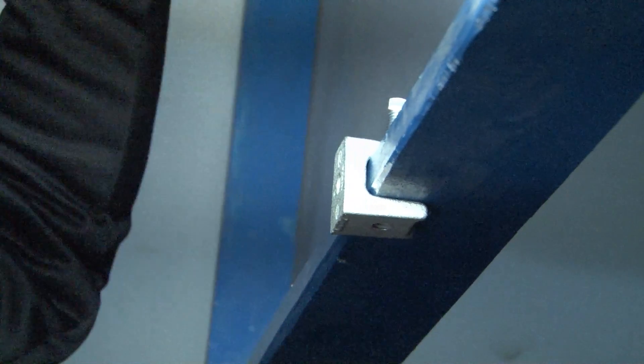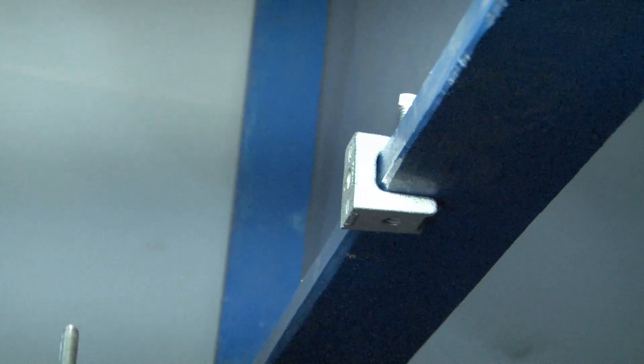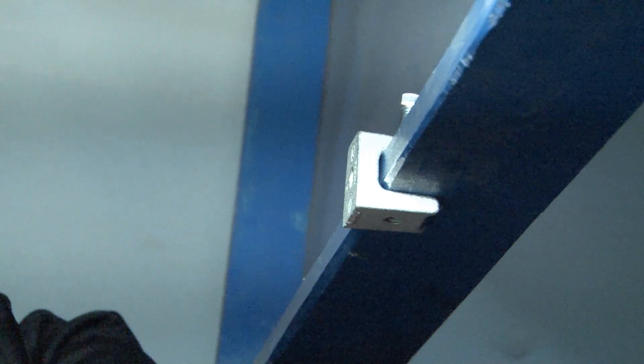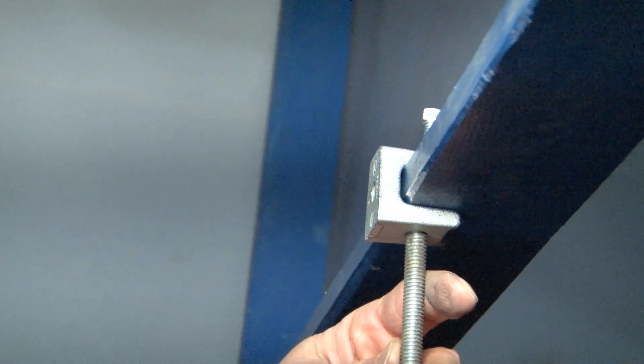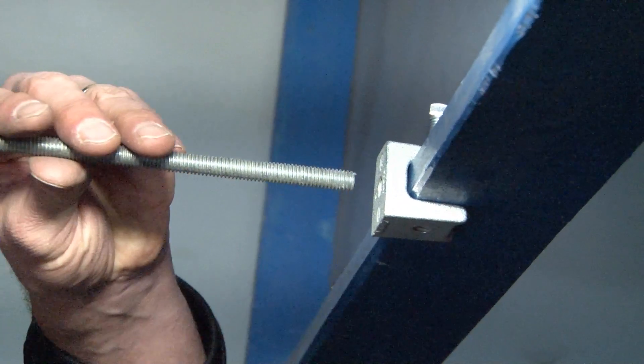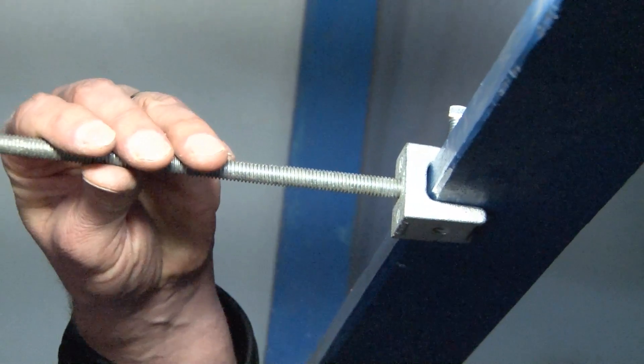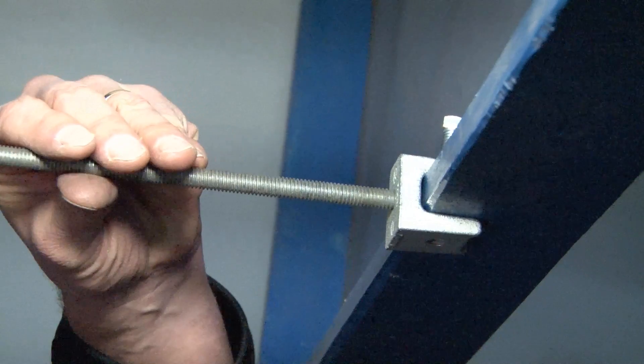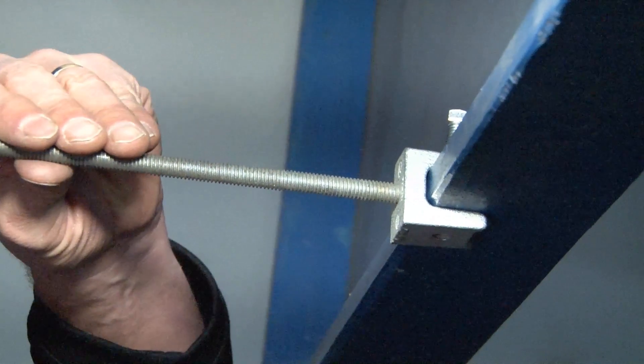At this point you can take your 3/8 threaded rod, which is the most common threaded rod and most common fasteners in the industry. You align it with the bottom hole or the back hole and simply screw in the threaded rod until it tightens down against the beam.